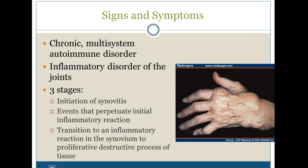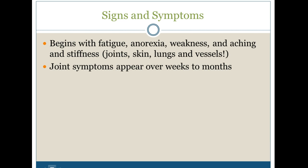It is a chronic multi-system autoimmune disorder. We see major inflammatory disorders of the joints. As you can see from the Medscape picture here, the first stage is the initiation of synovitis — the joints themselves, the synovial fluid, and synovial lining becoming very inflamed. Then there are events that perpetuate the initial inflammatory reactions, transitioning to a proliferative, destructive process of the tissues within those joints. The disease usually begins with fatigue, anorexia, weakness, and achy stiffness. It includes the joints, skin, lungs, and vessels, and joint symptoms appear over weeks or months.